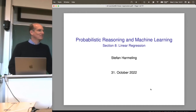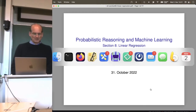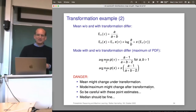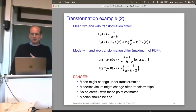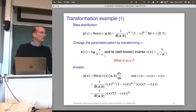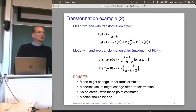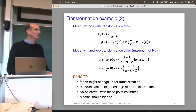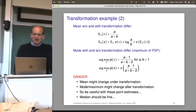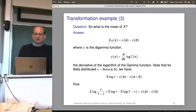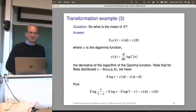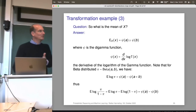Before we get to linear regression, I want to show you one notebook about an example from last time. You might remember the difficult transformation example where we changed the parameter of a beta distribution between 0 and 1 using the transformation logarithm of pi divided by 1 minus pi. The point was to show that the MAP estimate depends on the parametrization of your distribution, which is something you don't want — it should be independent of the parametrization. I derived the difference of the digamma functions for the left-hand side.